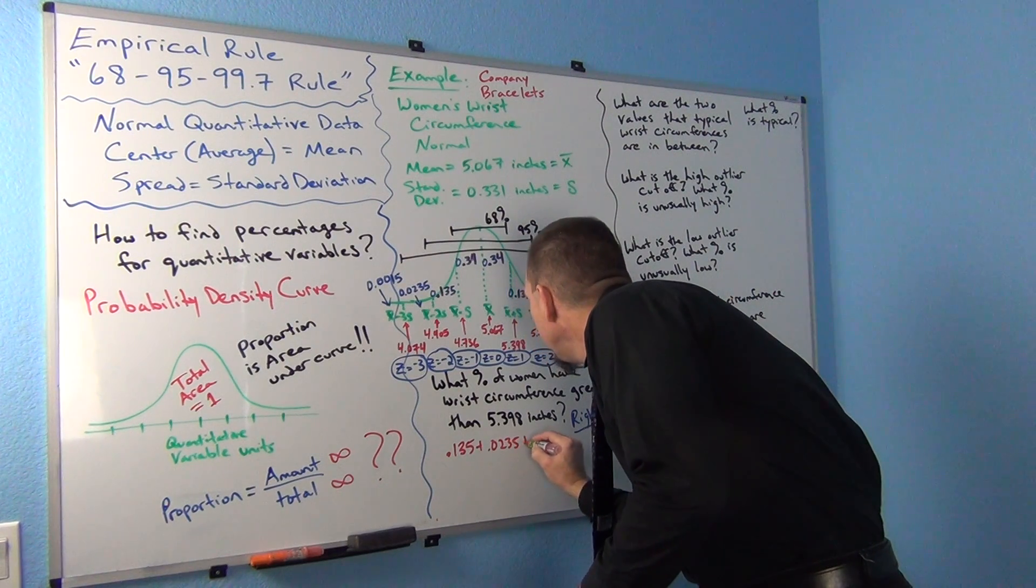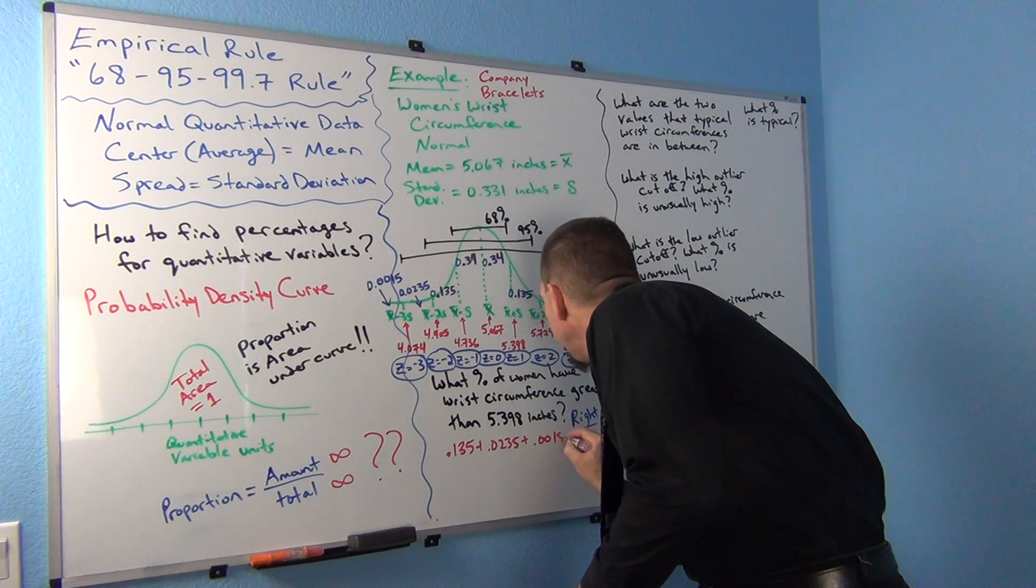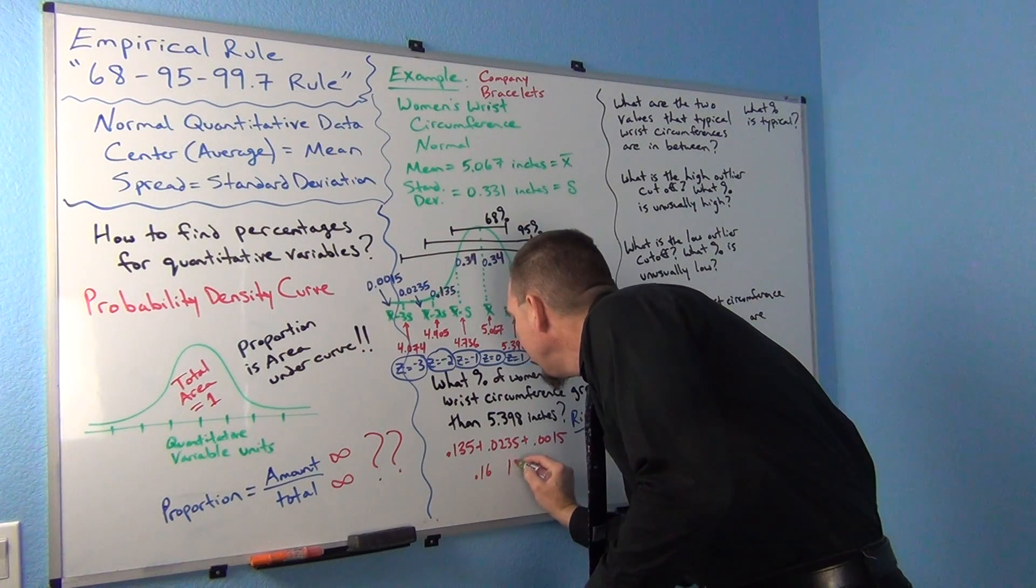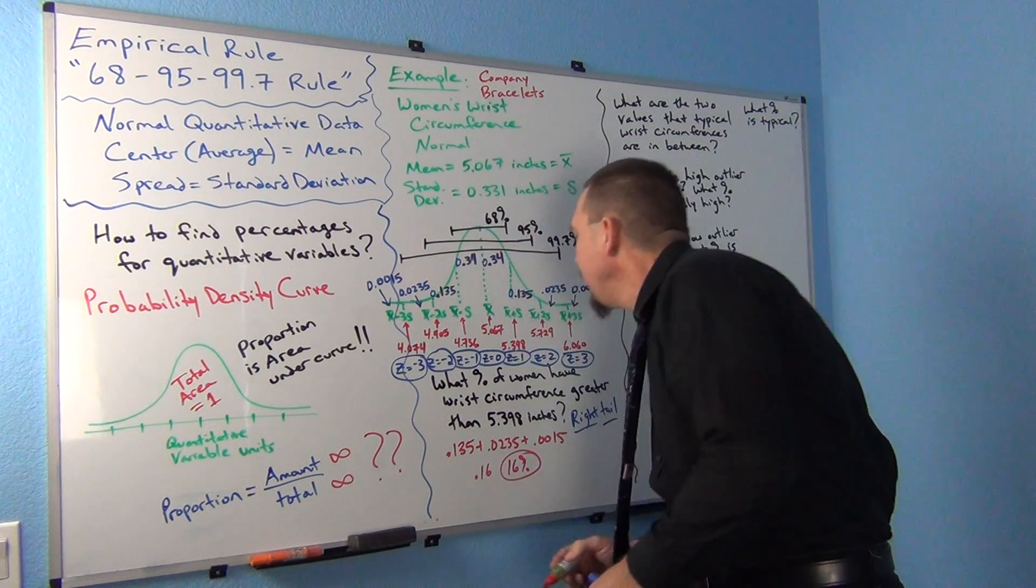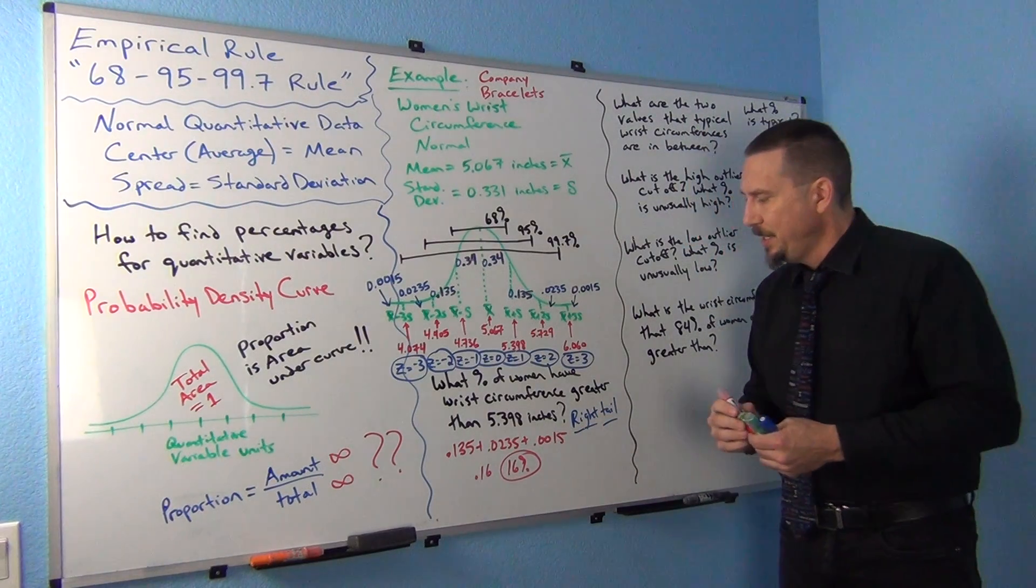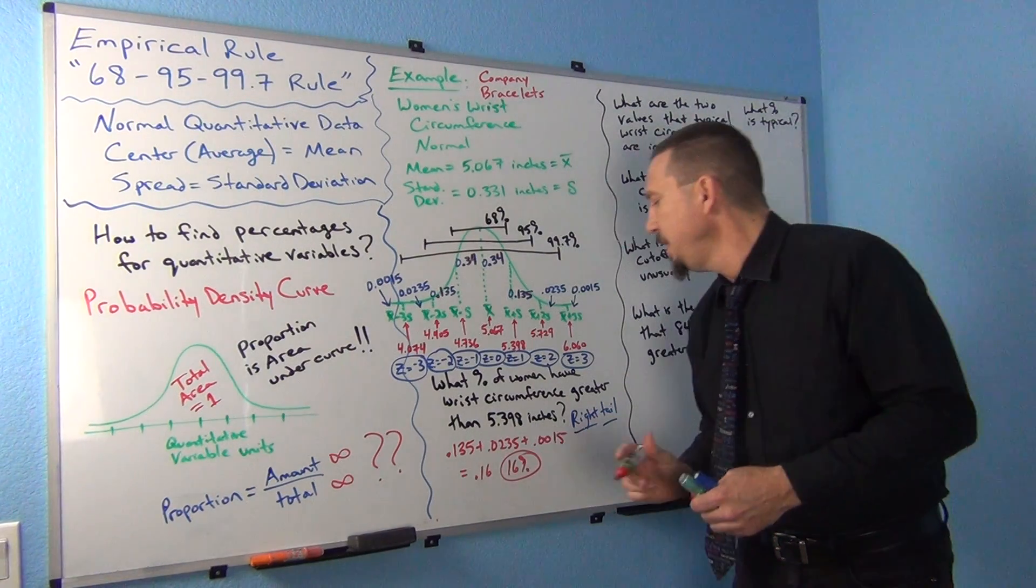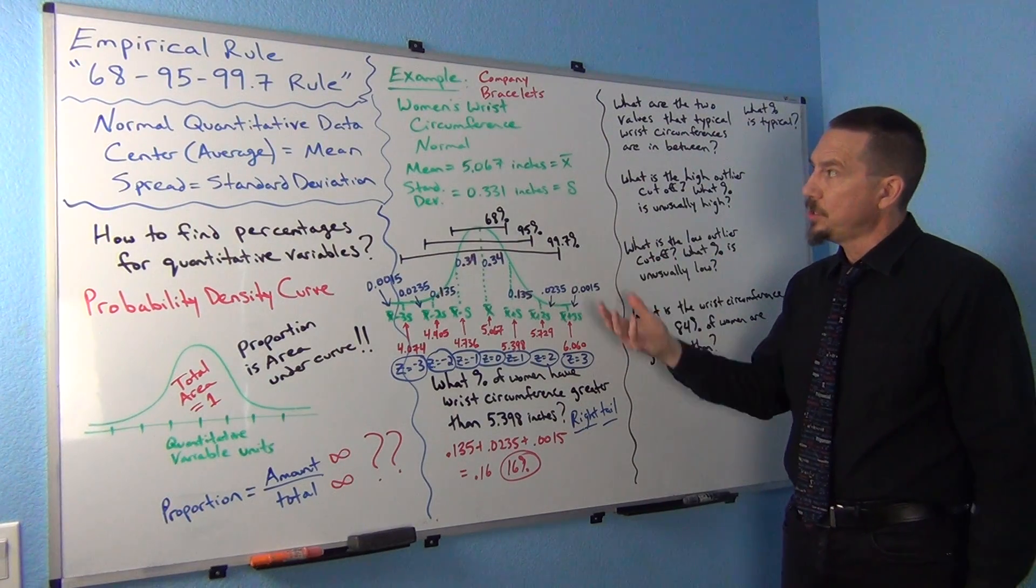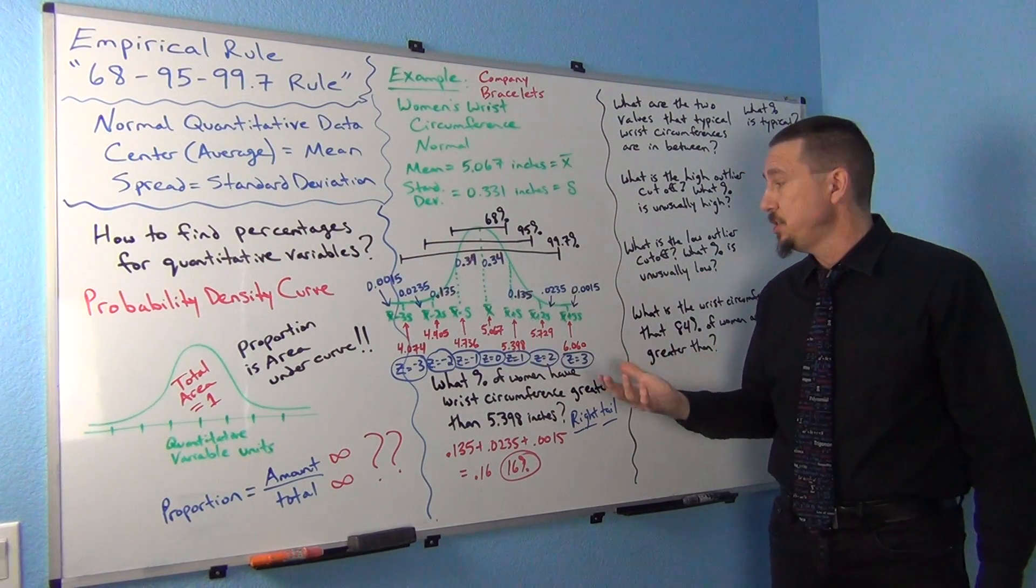0.0235 plus 0.0015, which is about 0.16 or about 16%. So we've got about 16% of women would have a wrist circumference greater than 5.398 inches.